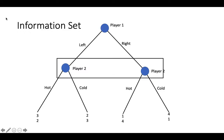A third way is to draw a box around the nodes that are in the information set. No matter how you draw your information set, they all mean the same thing, which is that when player 2 chooses what to do, they don't know yet what player 1 has done.